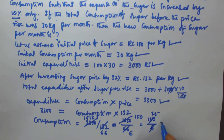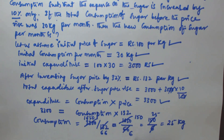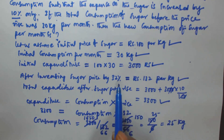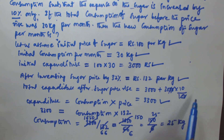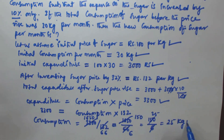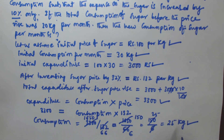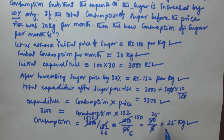So 3300 divided by 132 is going to be equal to 25 kgs. So the new consumption is 25 kgs. When the sugar price is increased by 32 percentage and the expenditure is increased by 10 percentage, the new consumption is going to be 25 kgs of sugar per month. I hope you got this one. Thank you very much for watching this video — please subscribe to my channel. If you have any doubt, please leave a comment. Thank you very much.